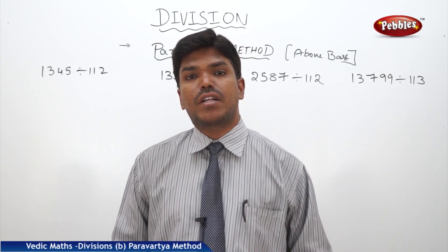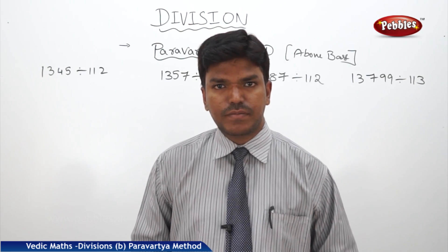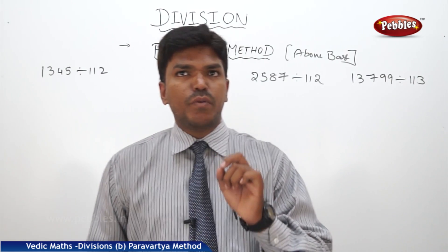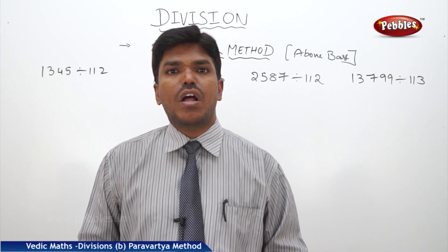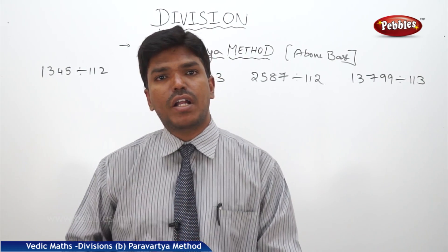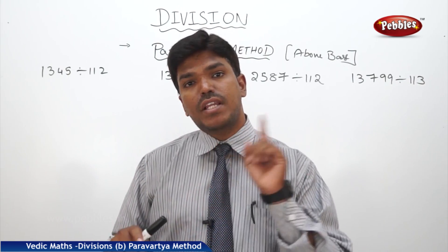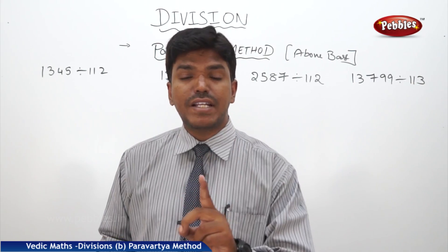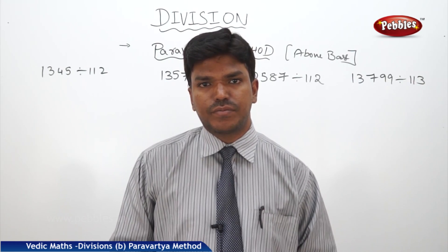Now let us discuss another important method in Vedic Maths for divisions — the Paravartya method. In the Paravartya method, divisions by numbers closer to 100, or below 1000 or 10,000 — numbers below the base — we use the Nikhilam method. But for divisors which are just above the base, we use the Paravartya method. Now let us see how.